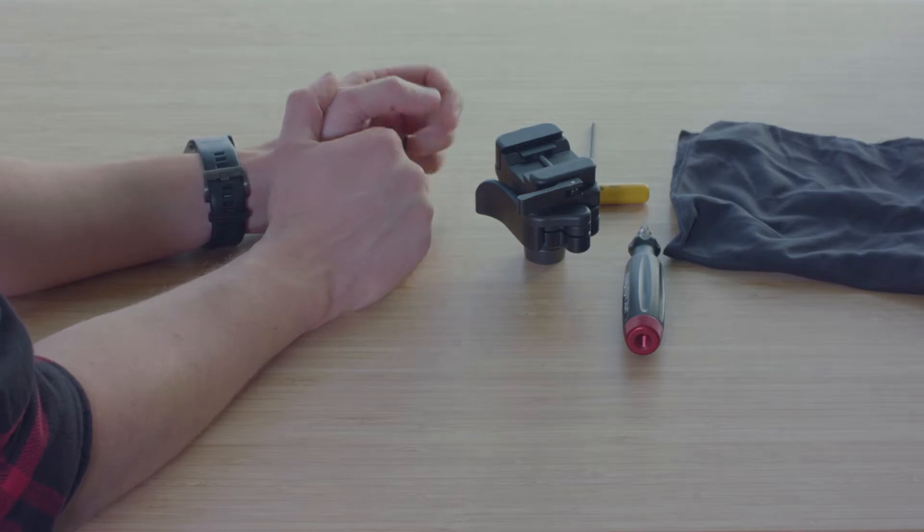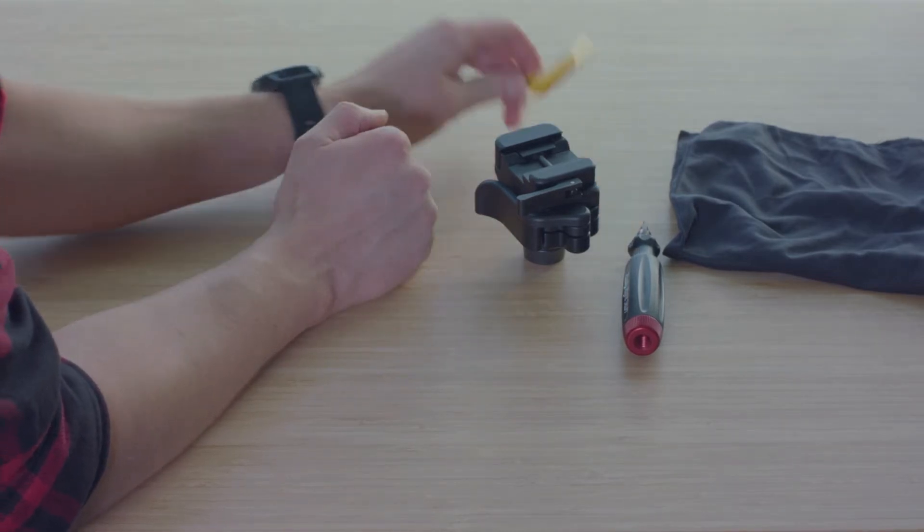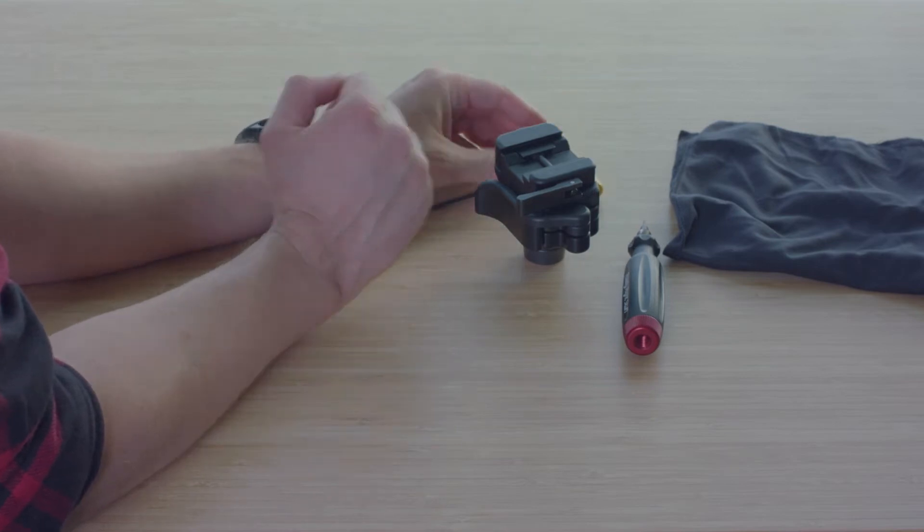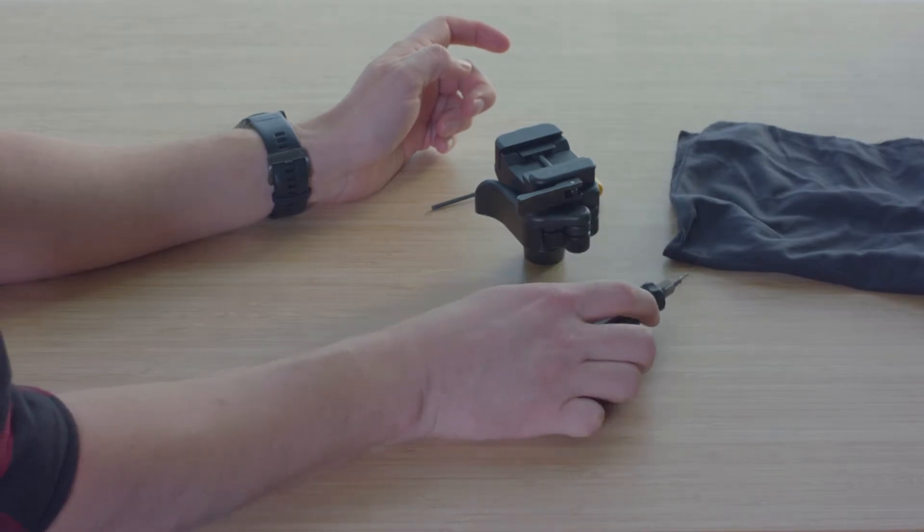So the first thing we're going to do is set up the anvil to disassemble it. Tools that you're going to need, it's 7/64ths, and just something that is pointy, you can do a knife or just a small punch.